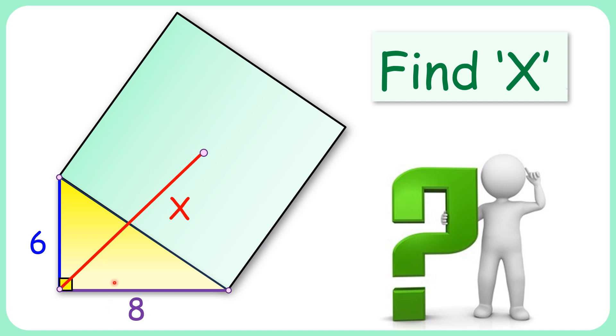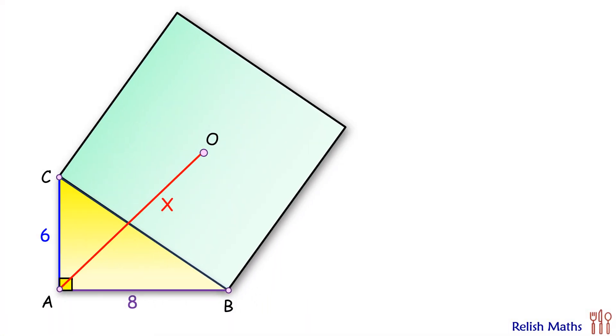Welcome to this interesting question. Given is a right angle triangle with side lengths 6 and 8 cm. With the hypotenuse as one of the sides, a square is drawn. Now this 90 degree vertex of the triangle is joined to the center of the square. With this given data, we have to find the length of this red line segment. Let's check the solution.